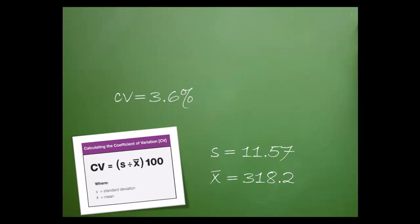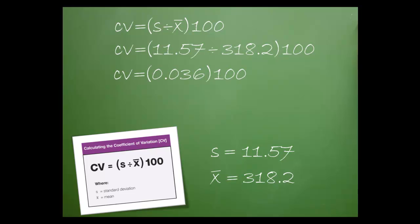The CV is 3.6%. Here's how I got that figure. First, I entered the mean and the SD into the formula. I divided the SD by the mean. The result was 36 thousandths, which was then multiplied by 100. The result was a CV of 3.6%.